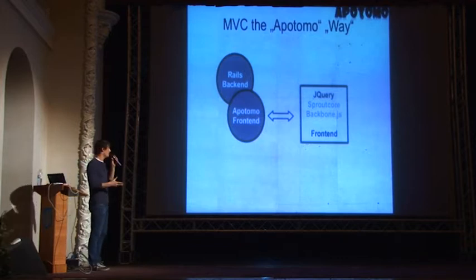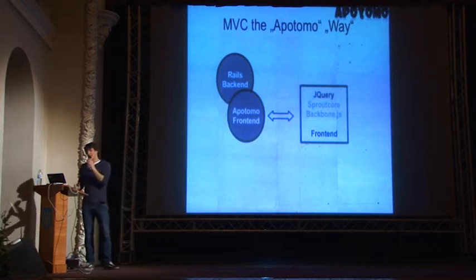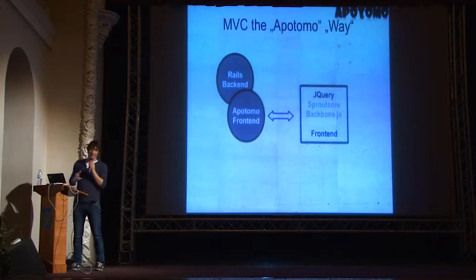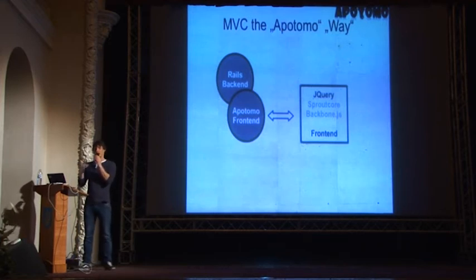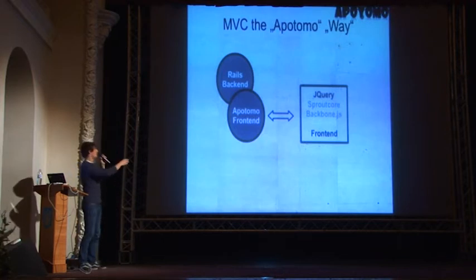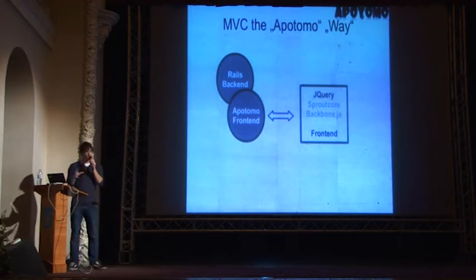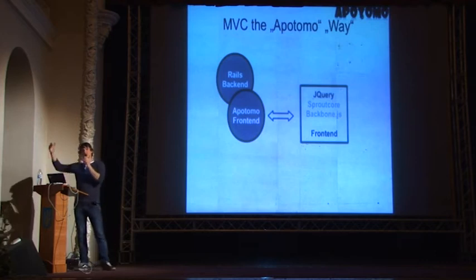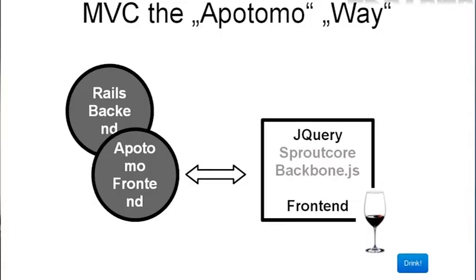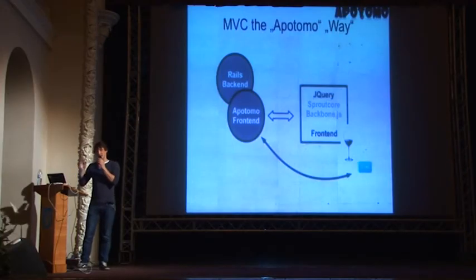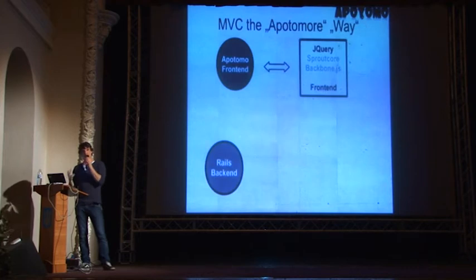In Apodomo, the approach is a little bit different. Apodomo is a Rails gem, so it's running inside a Rails application. I do a lot of my user interface in Rails and in Ruby. Apodomo is still using JavaScript and Sproutcore or Backbone.js to update the screen and get user gestures, but the most part of the user interface is done in Ruby. When I click drink, the event is reported to Apodomo, and Apodomo can handle that event in Ruby.